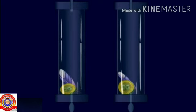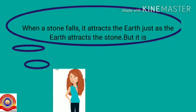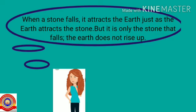Now let's consider another question: when a stone falls, it attracts the earth just as the earth attracts the stone, but it is only the stone that falls — the earth does not rise up. What is the reason behind this?